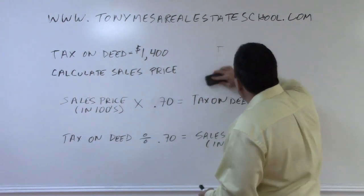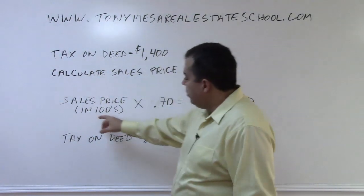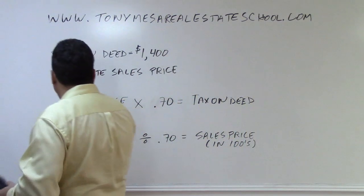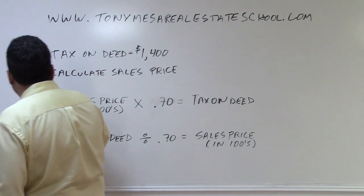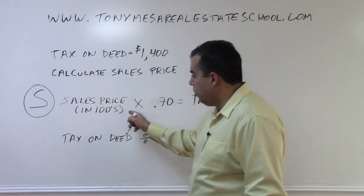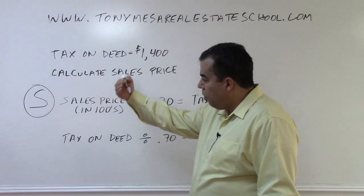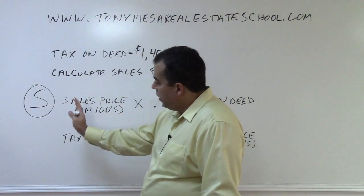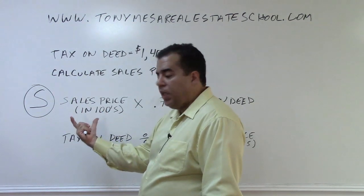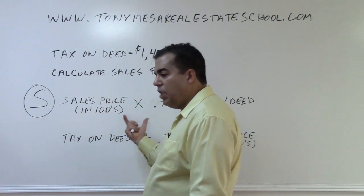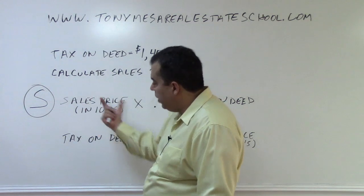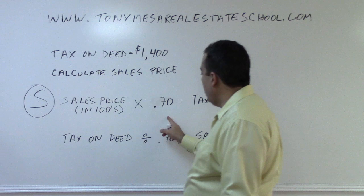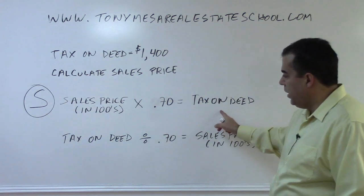What happens mathematically when you're using the S-in-taxes formula: it's the sales price in hundreds. You draw the line between the tens and the hundreds. If it ends with zero-zero, you leave the number on the left the way it is — that's how many hundred-dollar parts you have. If it does not end with zero-zero, you add one to the number on the left for the fractional part of a hundred dollars. That number multiplied by 70 cents gives you the tax on the deed.